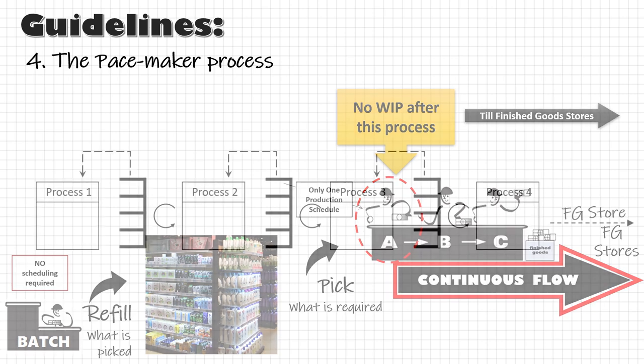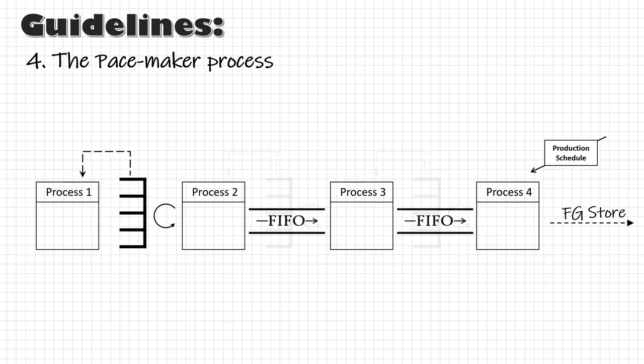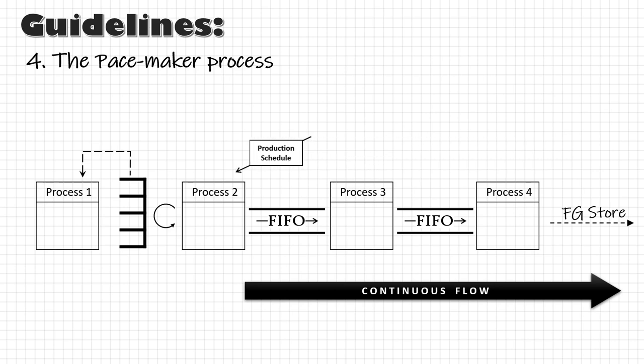So if we are planning a number of supermarkets, our pacemaker process could be the last one, since continuous flow is happening only from process section 4 to the finished goods. Alternatively, we can use a FIFO lane, represented by its symbol, and in that case we can have a continuous flow from process section 2 to the finished goods, making process section 2 the pacemaker process.